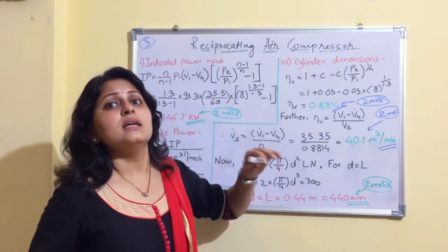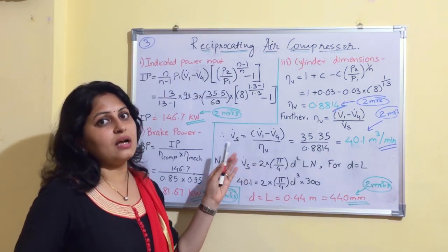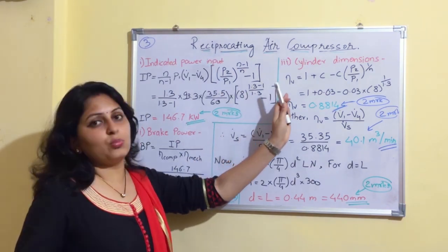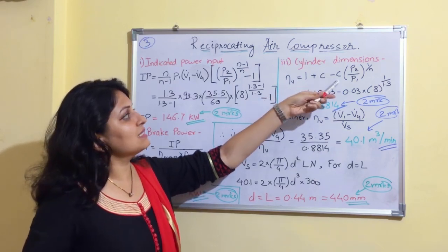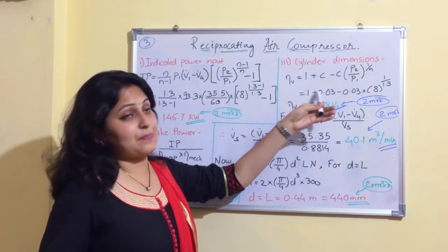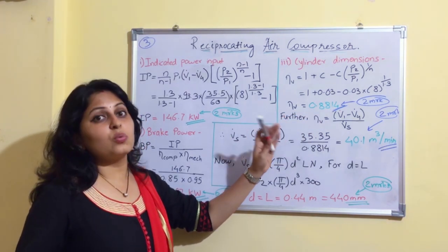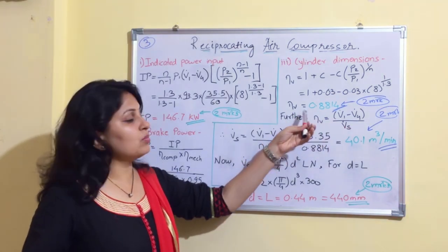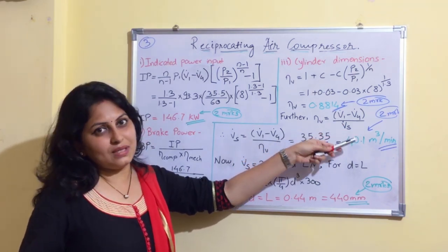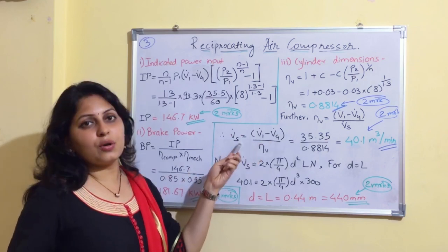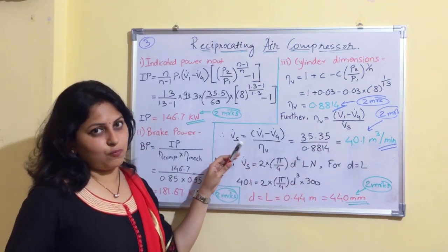The next term is cylinder dimensions — diameter and stroke length. To find these, we first calculate volumetric efficiency using η_vol = 1 + C − C·(P2/P1)^(1/n). Substituting all values, we get η_vol = 0.8814. Then using η_vol = (V1−V4)/Vs, we get swept volume Vs = (V1−V4) / η_vol = 40.1 m³/min.